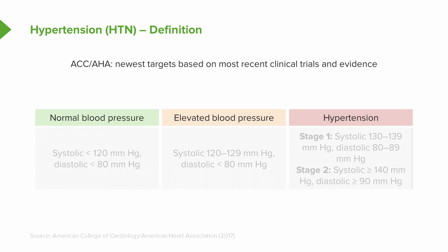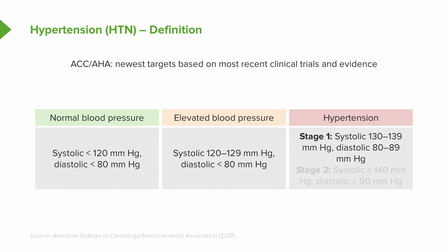Over the last couple of years, we've had some interesting randomized controlled trials, and therefore the American College of Cardiology and the American Heart Association have provided newer targets based on the most recent evidence. A normal blood pressure according to the ACC and AHA is still less than 120 over 80. An elevated blood pressure is now considered a systolic between 120 and 129 with a diastolic of less than 80. Stage one hypertension is now a systolic between 130 and 139 and a diastolic of 80 to 89. Stage two by the ACC and AHA is a systolic greater than or equal to 140 and a diastolic greater than or equal to 90.